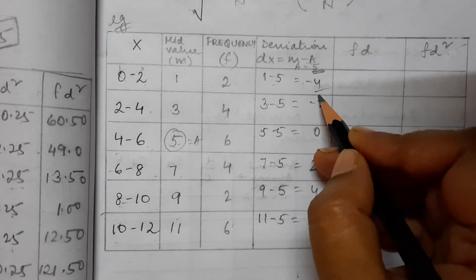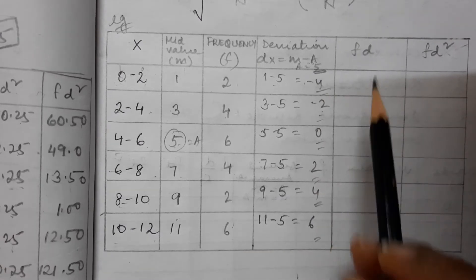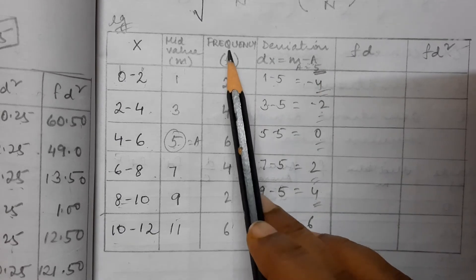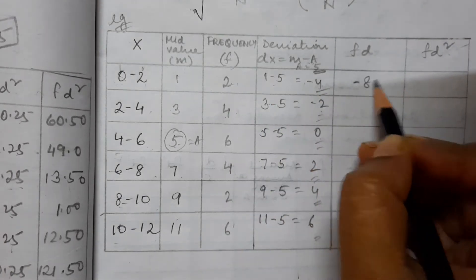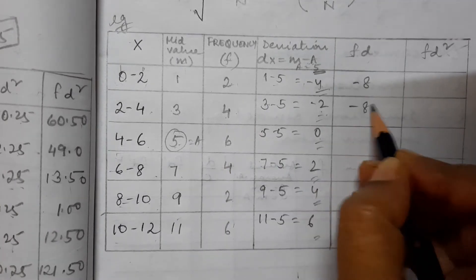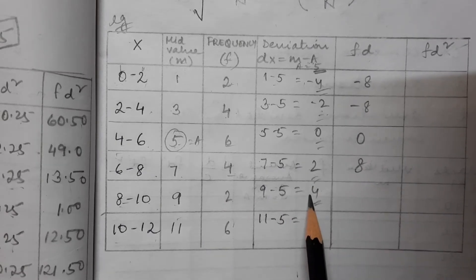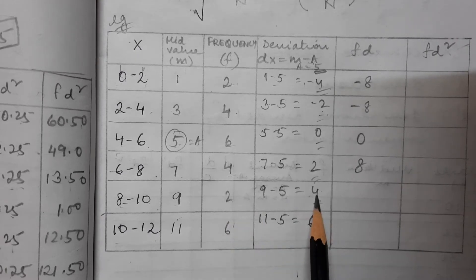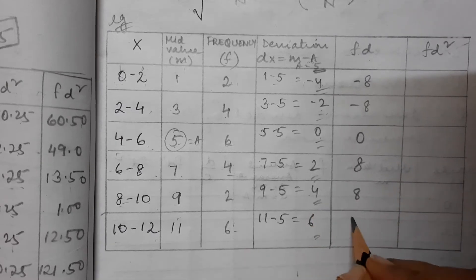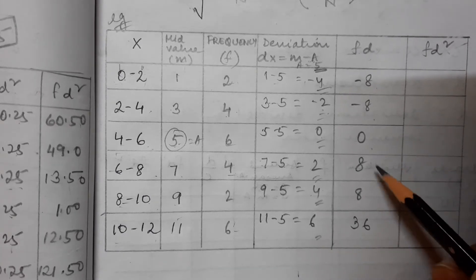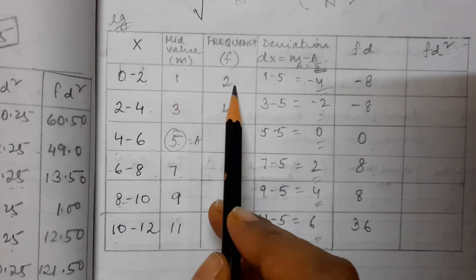Next, the deviations should be multiplied with the frequencies to get the fd column. So: 2×(−4) = −8, 4×(−2) = −8, 6×0 = 0, 4×2 = 8, 2×4 = 8, and 6×6 = 36. So your fd values are: −8, −8, 0, 8, 8, 36.